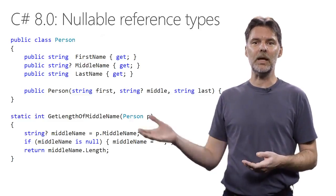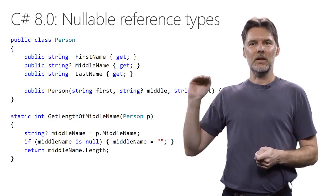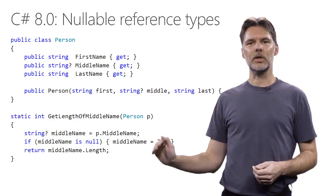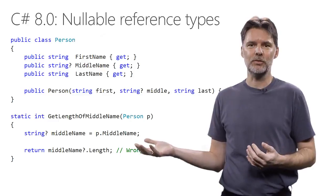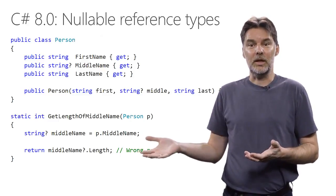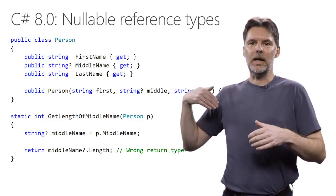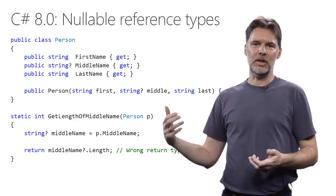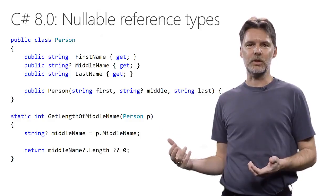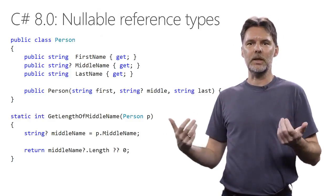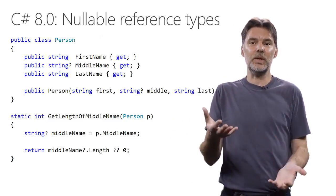Yet another approach is to use a null conditional operator, question dot. Of course, now we're returning a nullable int, not an int. So, there's another bug there, but then we can go fix that. Either by changing the return type of the method and then fixing up the caller, or we can use the null propagating operator, question question, and just return a zero when the middle name happened to be null. So, you see, the feature finds your problem and then leaves you free to fix it in whichever way you prefer.